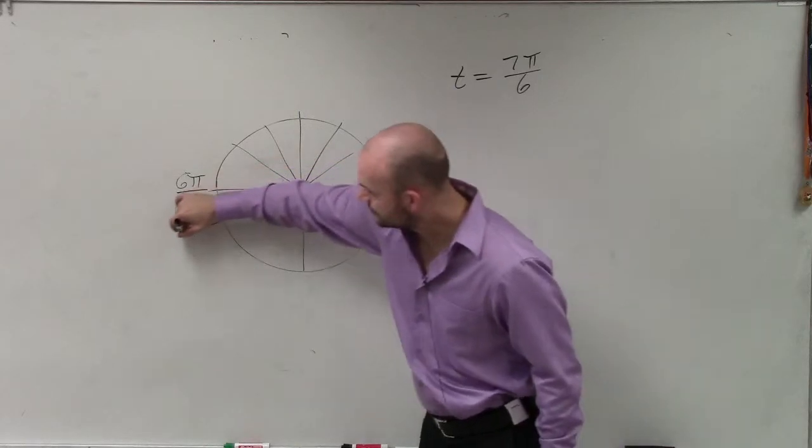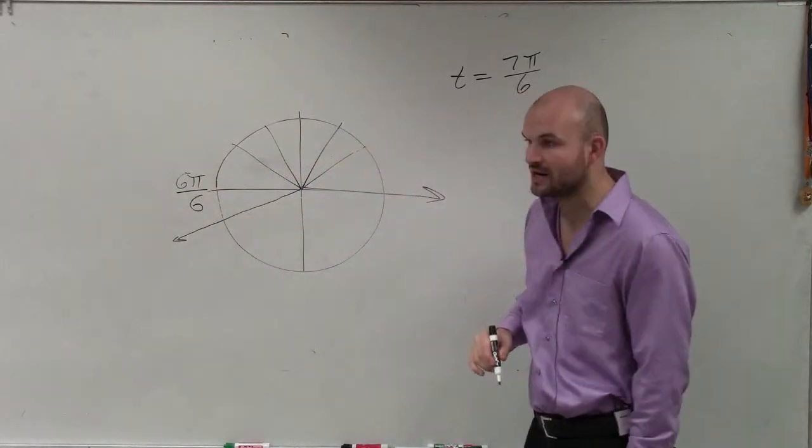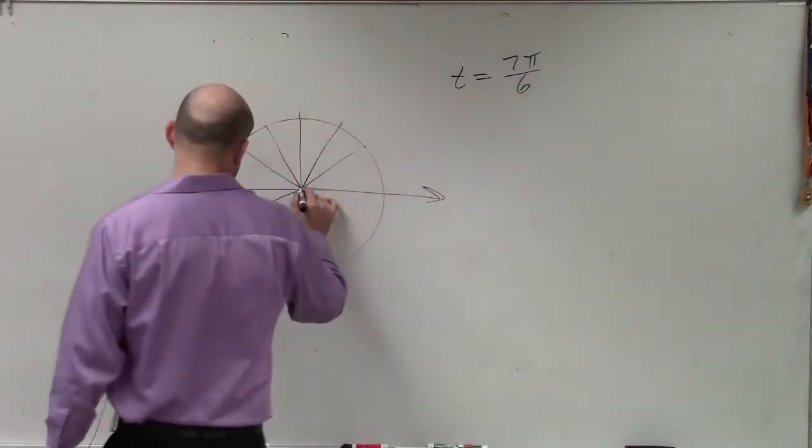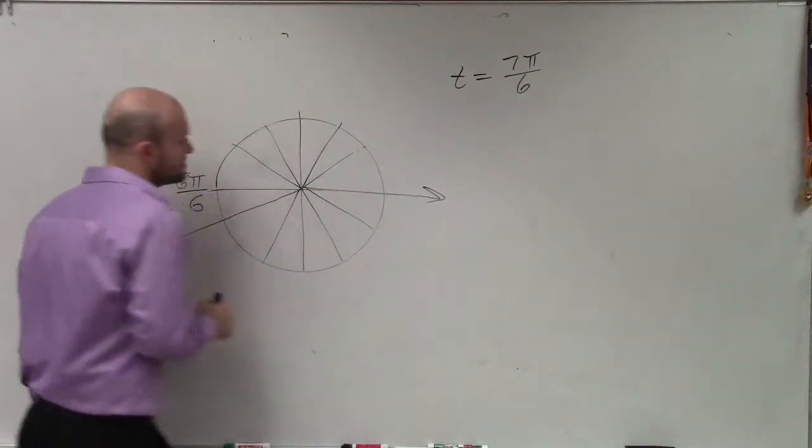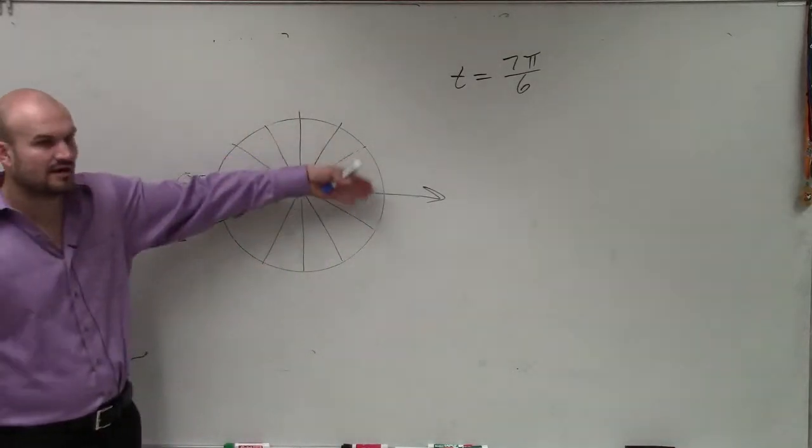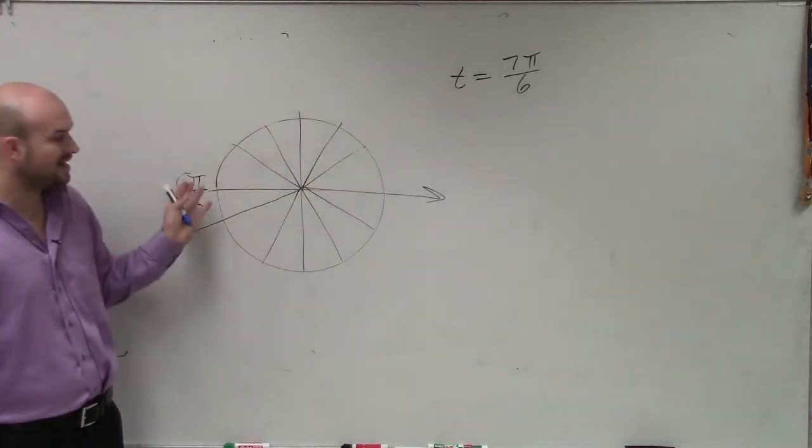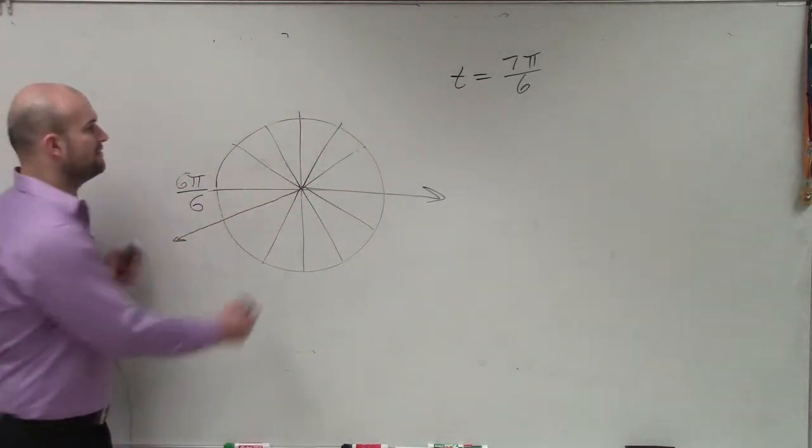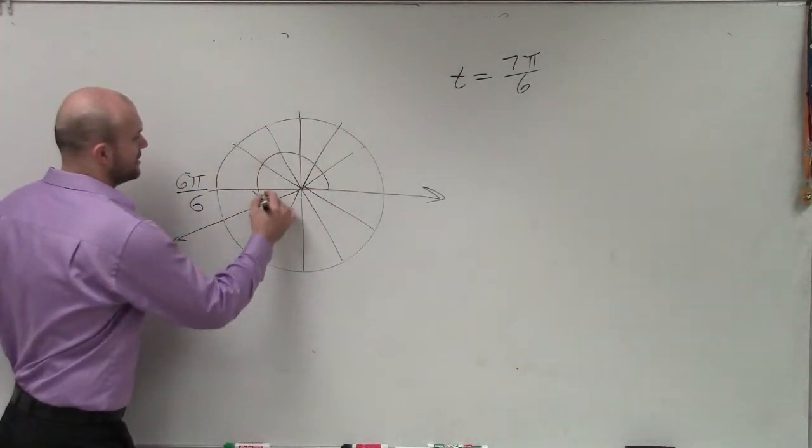So therefore, the next one would be right there, 7 pi over 6. Because if I was to break this up into 6's as well, half the circle is pi, 6 pi over 6. So therefore, my angle is all the way right here.